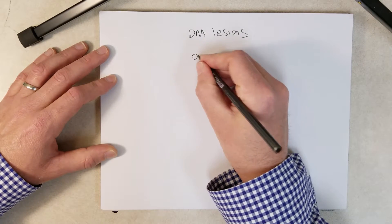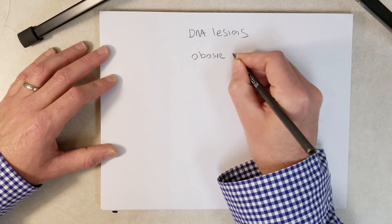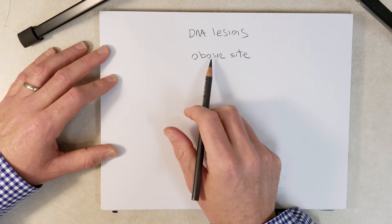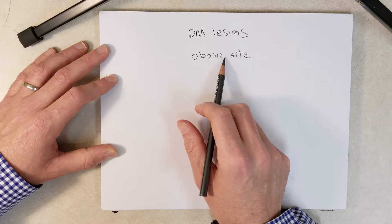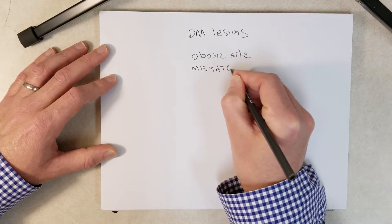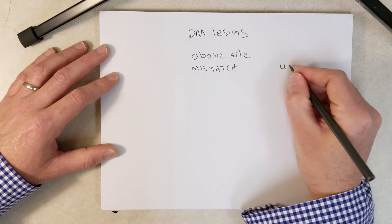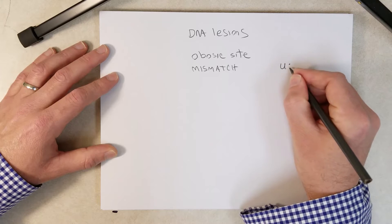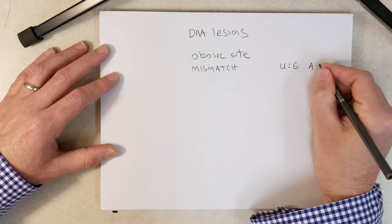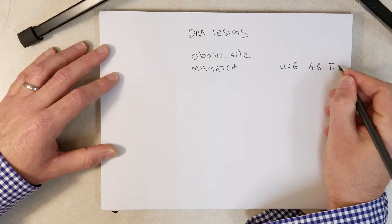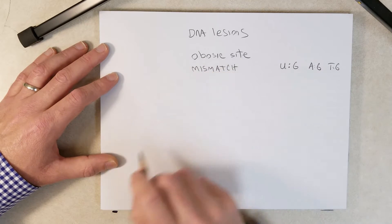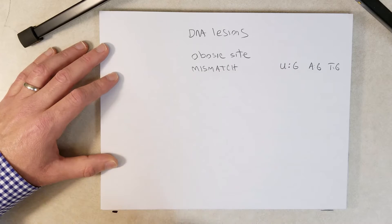Let me give you some examples. An abasic site is a nucleotide that is missing the nitrogenous base — that is a DNA lesion. A mismatch is another example: uracil shouldn't be in DNA to begin with, but U paired with G is a mismatch. A paired with G is not right. T paired with G is not right either. Mismatches are lesions.